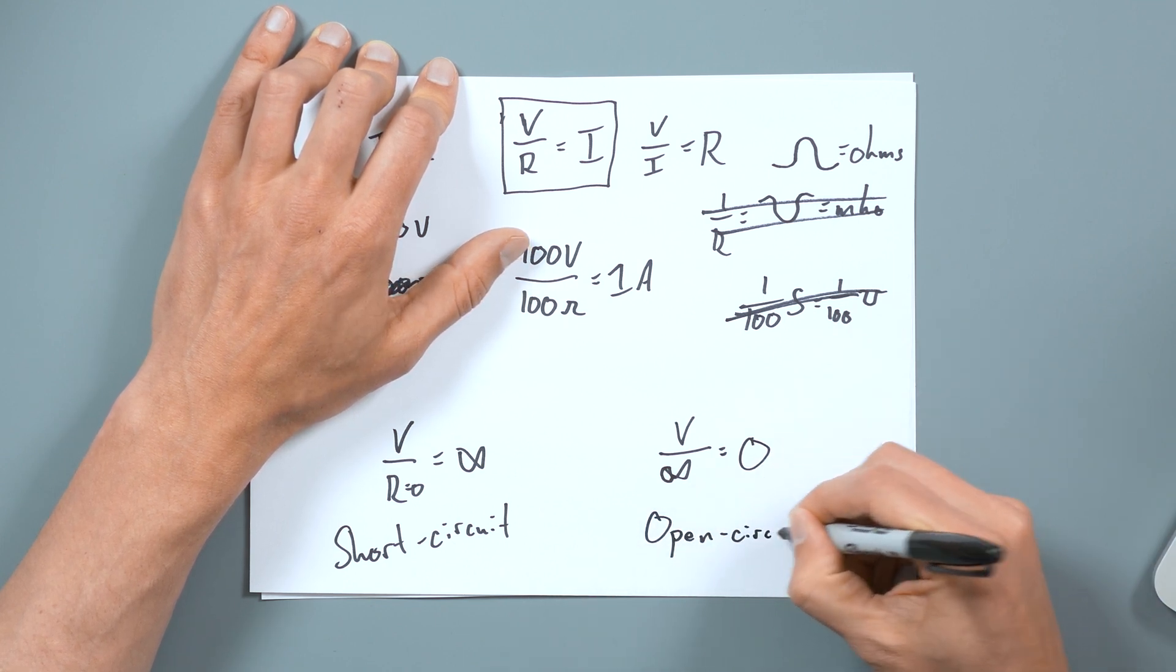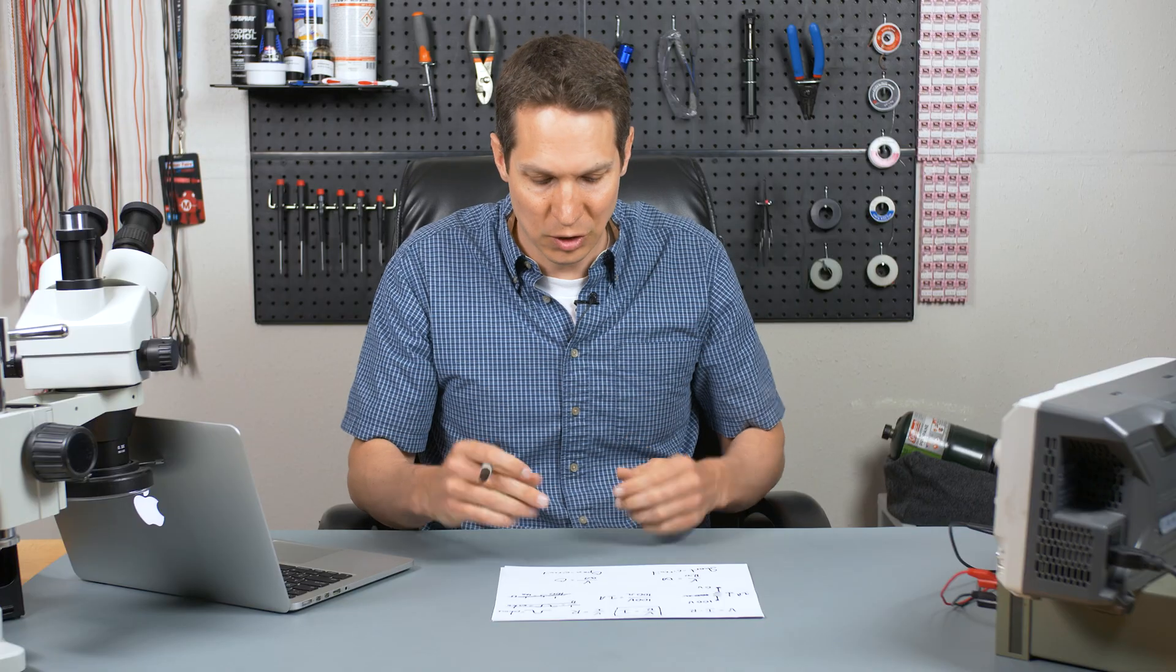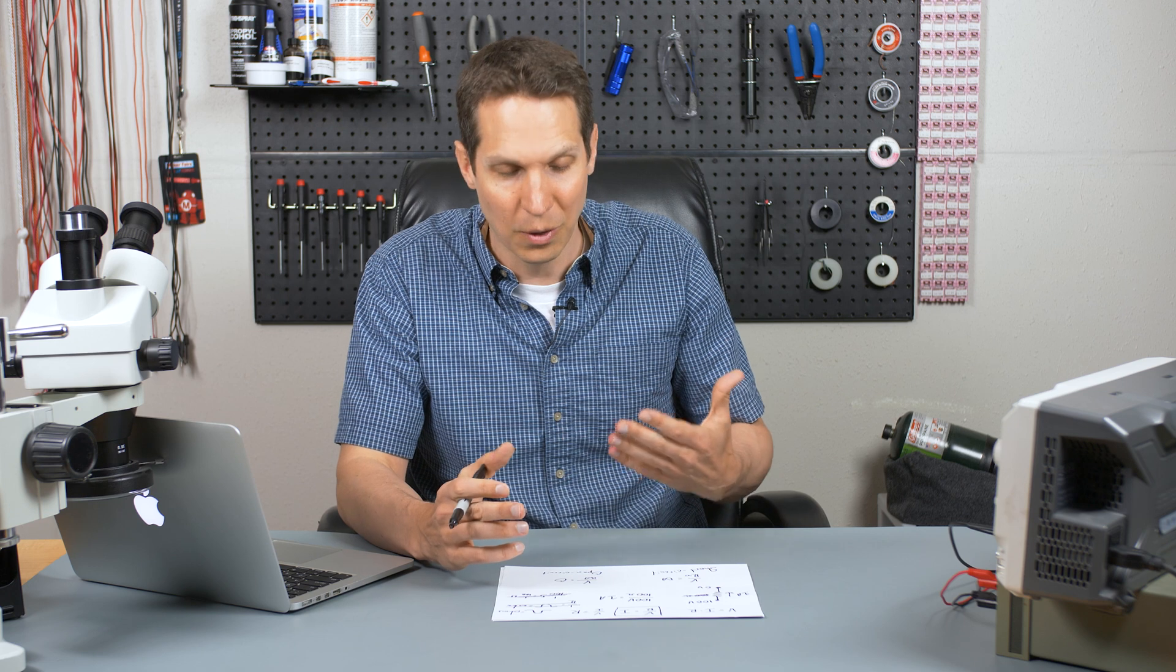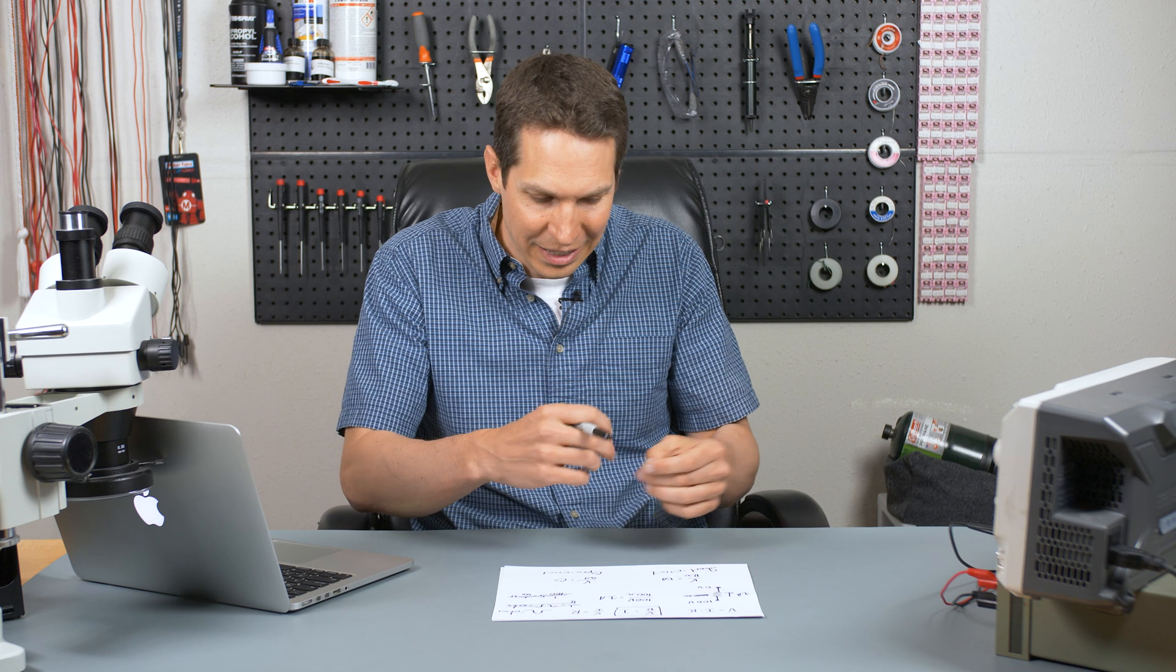And sometimes this is what you want. Sometimes this isn't what you want. Sometimes when you have a circuit and you're testing things and you are not getting any current, it's like, oh, okay, that means that I have an open somewhere in this. And if it's on your circuit board, and you can't see where it's broken, that's a problem.